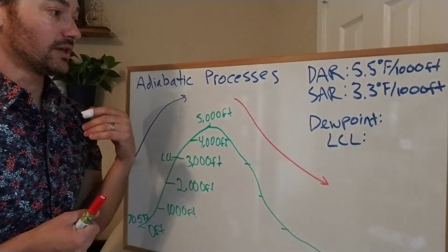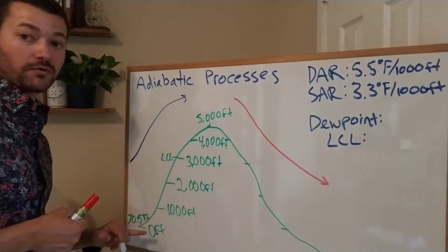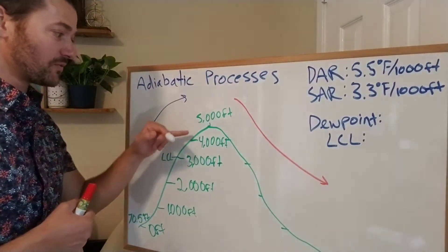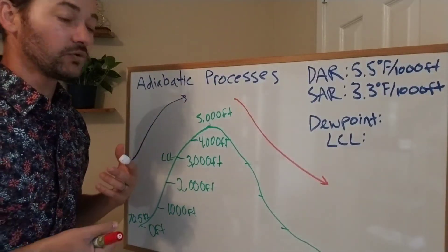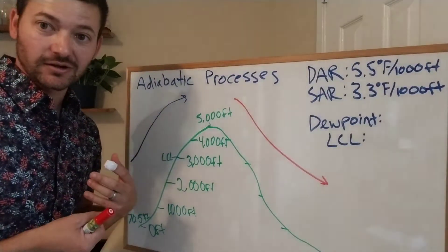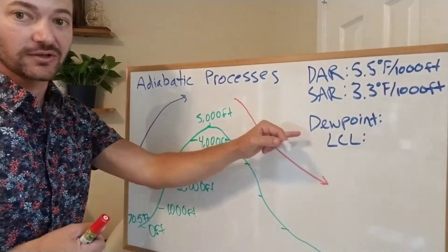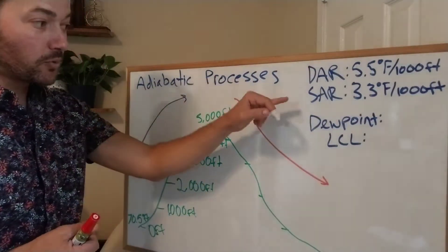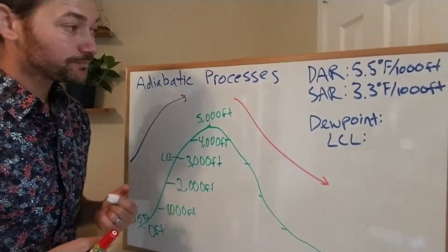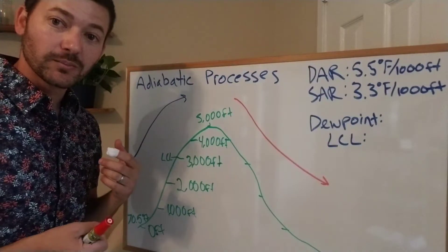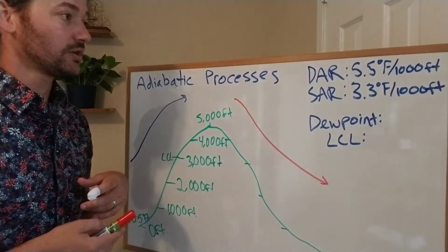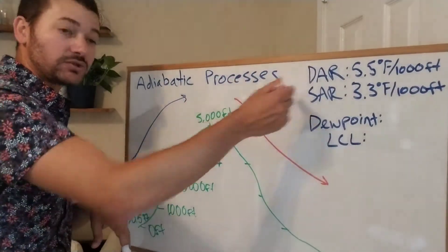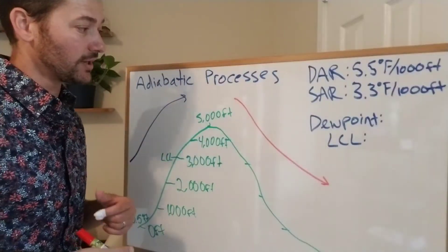We also call that the lifting condensation level, or LCL — the altitude where you can see the clouds, probably around 3,000 to 5,000 feet. Dew point temperature is the air temperature when air is saturated, so it's the temperature at which you switch to the saturated adiabatic rate.